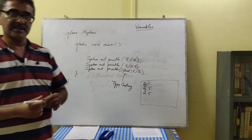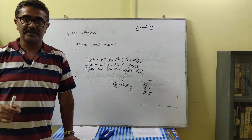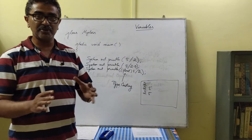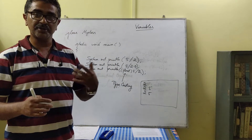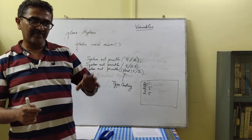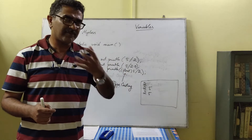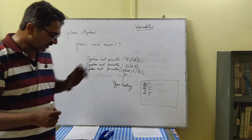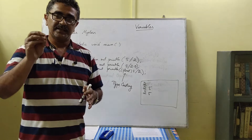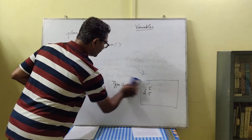The next topic is variables. Variables are names given to different parts of the memory location — specifically the RAM. Java requires that every time you use a part of memory, you declare what type of data it's going to store. For now, we'll work with integer and float type numbers.